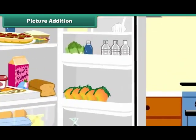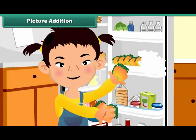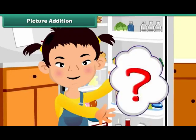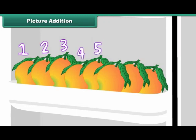There are five mangoes in the refrigerator. Shipra puts in three more. How many mangoes are there in the refrigerator? Count them: one, two, three, four, five, six, seven, eight. There are eight mangoes in the refrigerator.